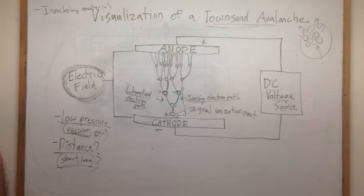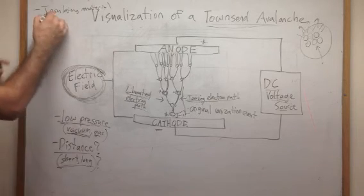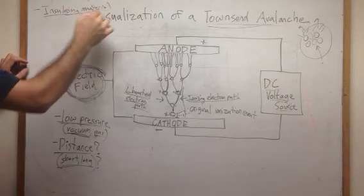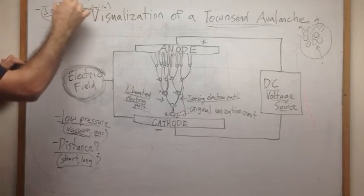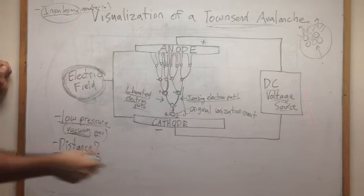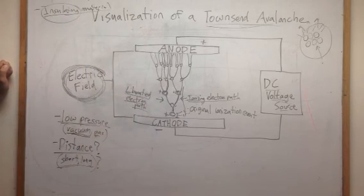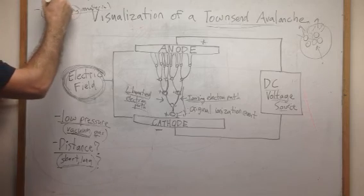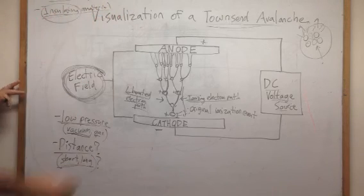This Townsend avalanche can be applied in making insulating material become ionized, ionizing the material. Which means any element - you can ionize conducting matter and you can ionize insulating material.